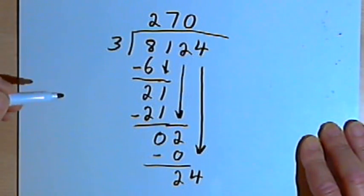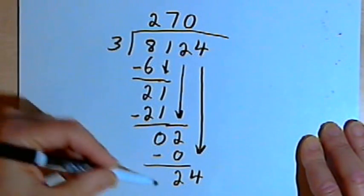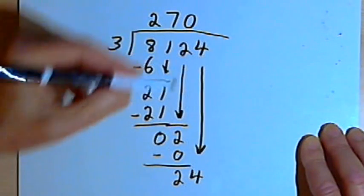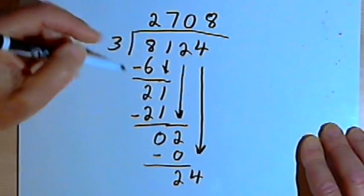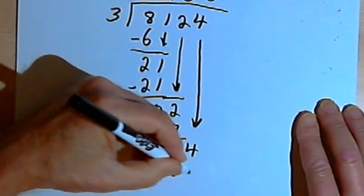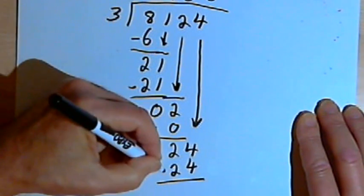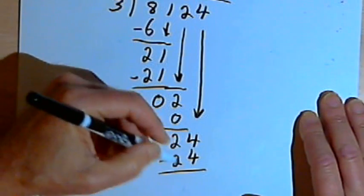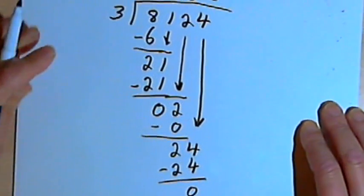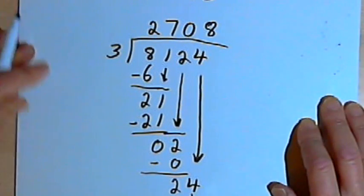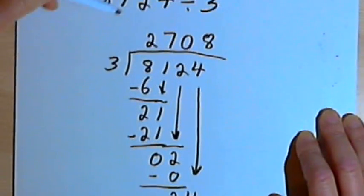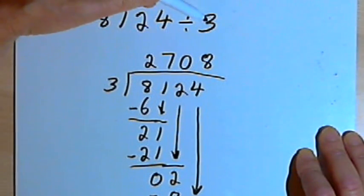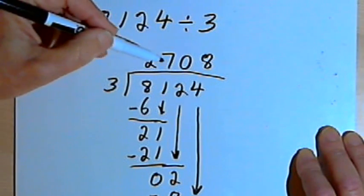And I bring down the next number. And start again. 3. I've got a 24. 3 divided into 24 goes 8 times. 8 times 3 is 24. Subtraction. 24 minus 24 is 0. There's nothing else to bring down. And so the answer to this problem. 8,124 divided by 3 is 2,708.